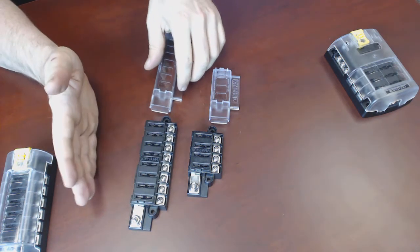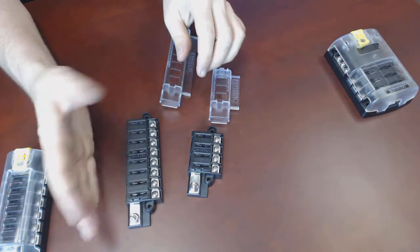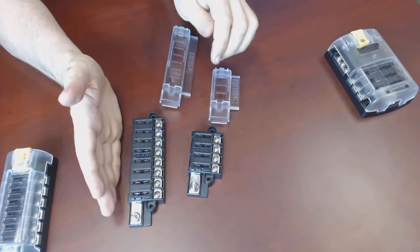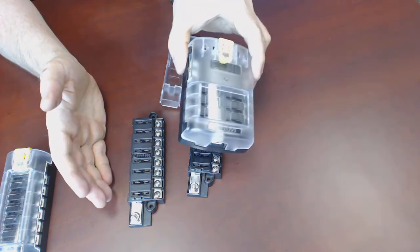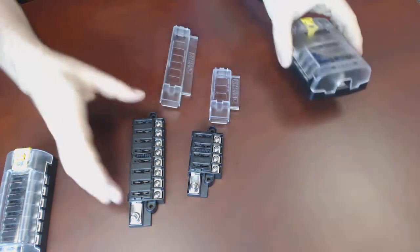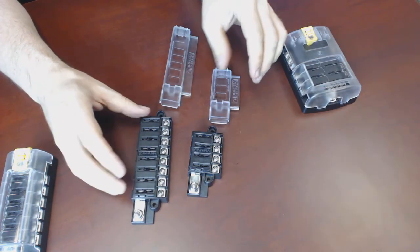So these are single-sided fuse blocks, so they're really handy if you're mounting them in a box or a console between the front seats somewhere where room is limited. Unlike this one where fuses come out each side, so you need room on each side, these ones only come out on one side, so it makes it really nice and simple.